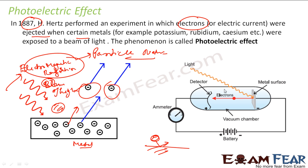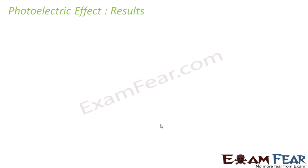He had this setup where this metal was present. He put some light on it — light is nothing but electromagnetic radiation. An electron came out and was attracted towards the positive side, completing the circuit, and you could see current flowing. You cannot see the electron directly, so he put the circuit here. When light fell on this metal, the electron came out, got attracted towards the positive side, the circuit got completed, and you could see the deflection in the ammeter. That was the experiment he did, and it clearly shows that electromagnetic waves are particle in nature.